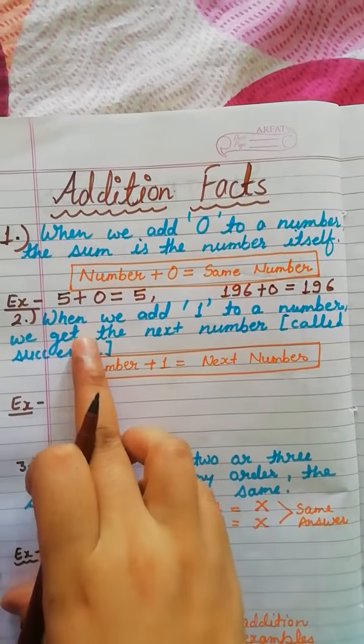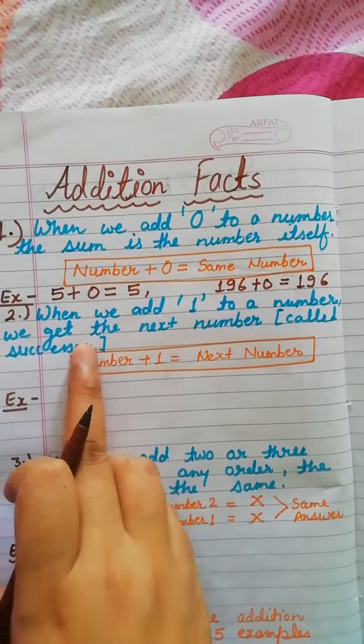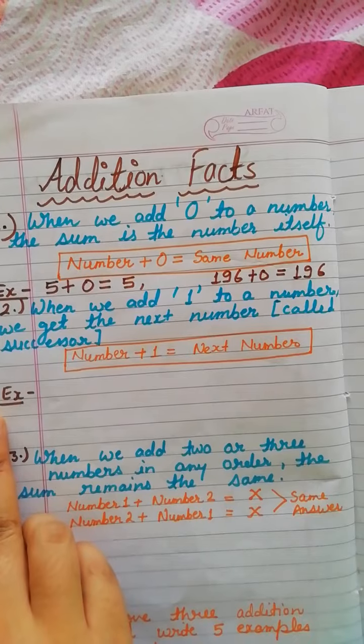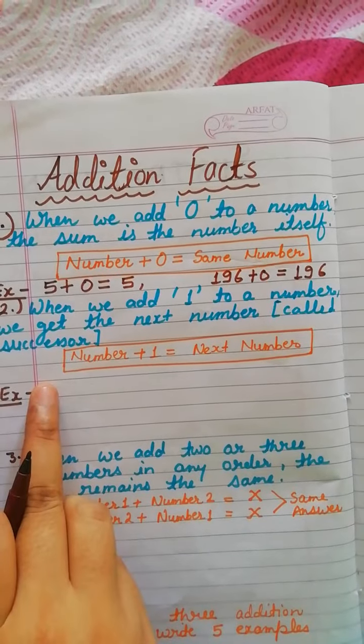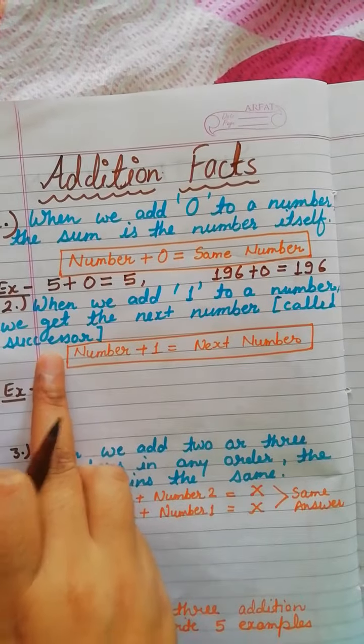The next addition fact is when we add 1 to a number, we get the next number. Whenever we add 1 to any number, we will get the next number in the answer. This is also called the successor.